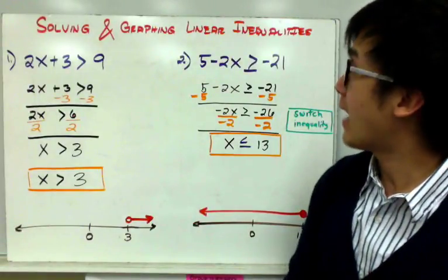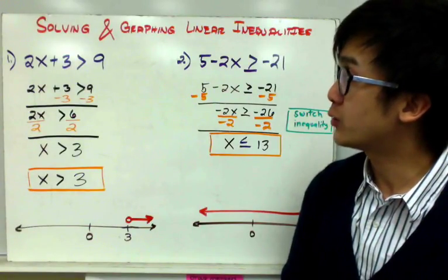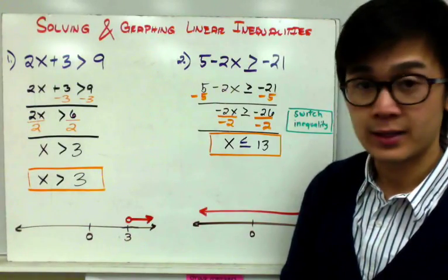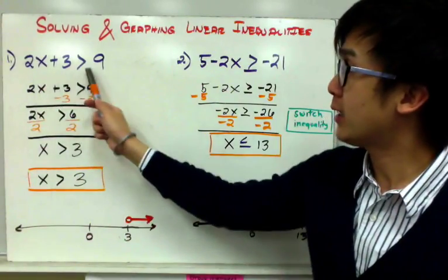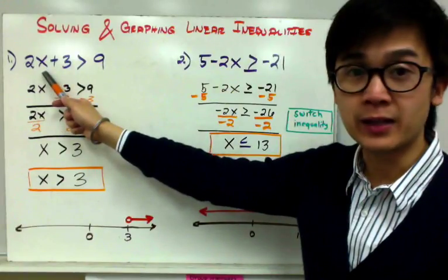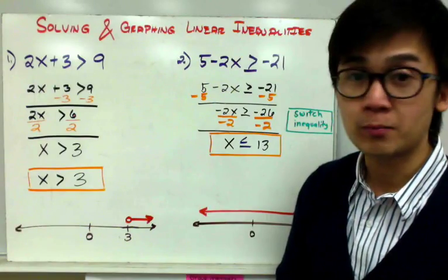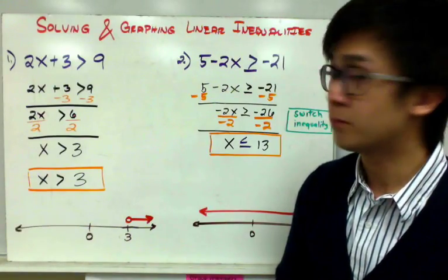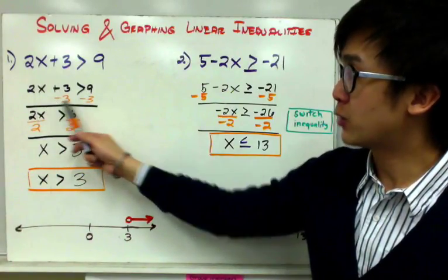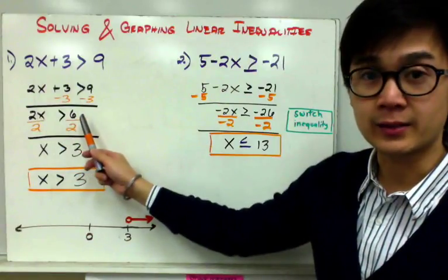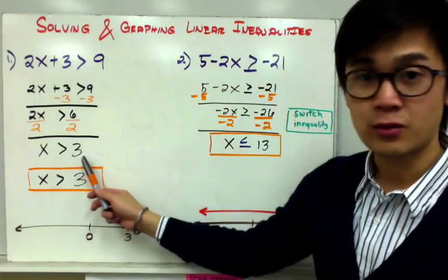Now to solve and graph a linear inequality, we're going to solve 2x plus 3 greater than 9, and then graph it afterwards. To solve, you need to get x by itself using two steps: first, subtract 3 on both sides to get 2x greater than 6, then divide both sides by 2 to get x greater than 3.